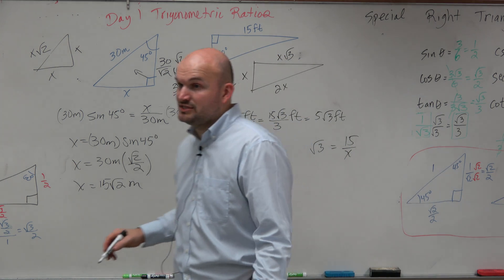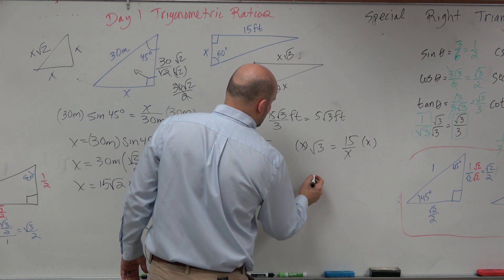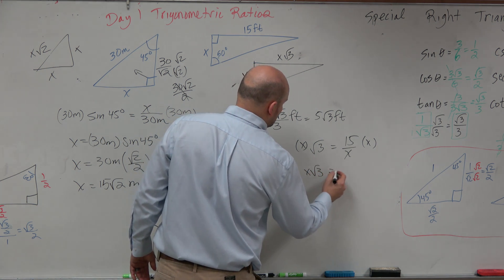So in reality, we could rewrite this as the square root of 3 equals 15 over x. Now, you can't solve for x when x is in the denominator, so you'd have to multiply by x on both sides.